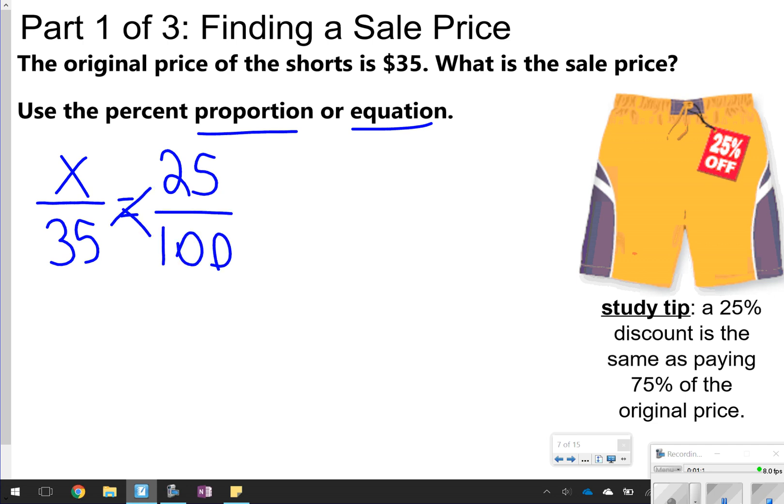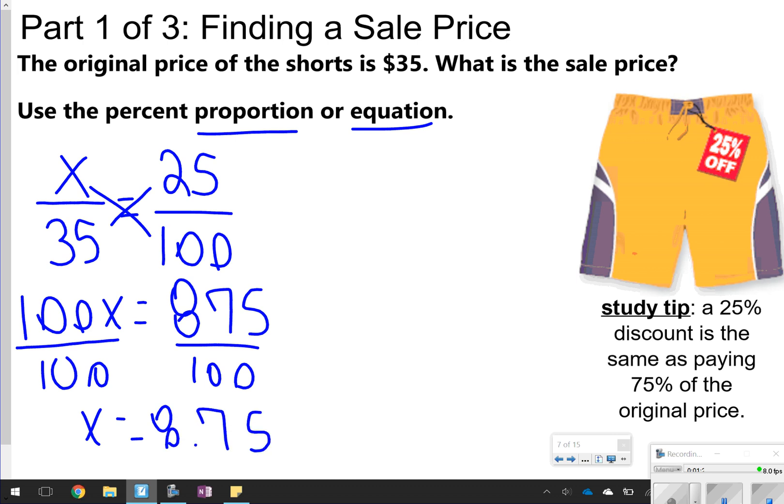We would cross multiply, so we would get 100x, and then type into our calculator 35 times 25. That gives us 875. Then we divide by 100, and x is equal to 8.75. That is going to be the price of the discount. The sale price, what you'd have to do is take the $35 and subtract the $8.75. So if we did that, we're going to get $26.25. That's one way you can do it.